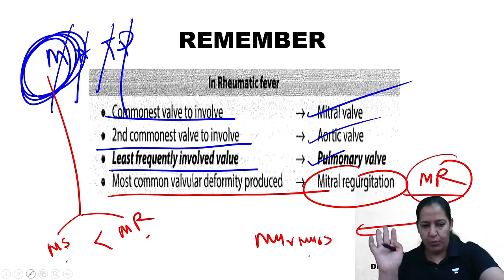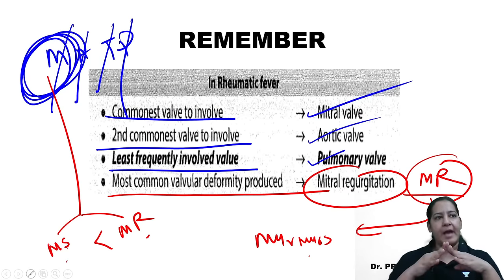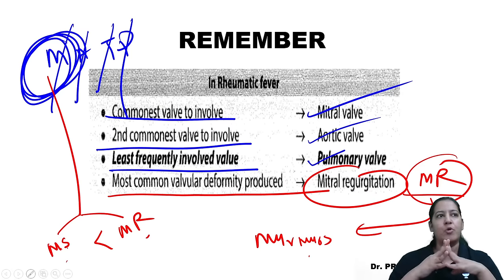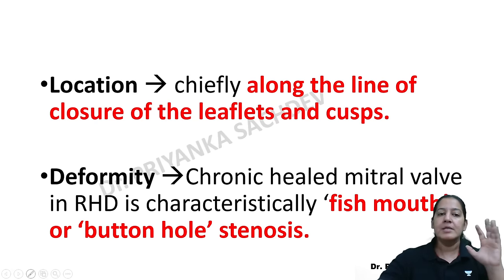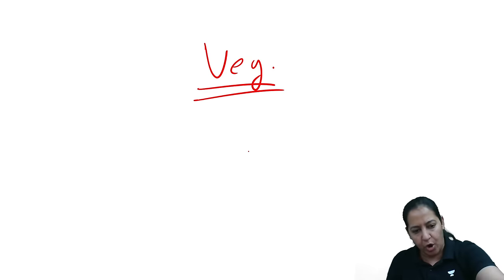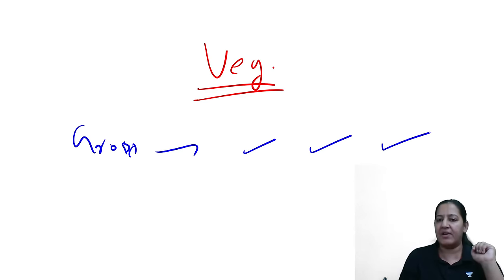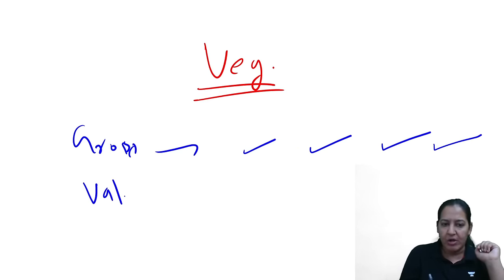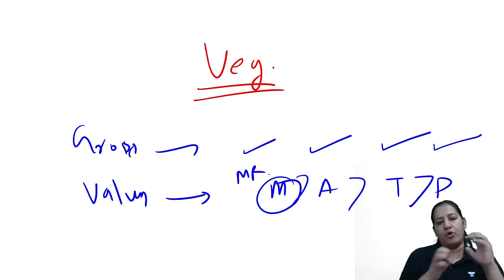Summary of valvular endocarditis findings: vegetations are small, multiple, sterile, and bland. Valve sequence is MATP. Most common valve is mitral; least common is pulmonary. Most common deformity is MR. Now I will discuss the exact location of vegetations on the valve. The valve has two surfaces — auricular surface (upper) and ventricular surface (lower) — and a junction where the two leaflets/cusps meet.